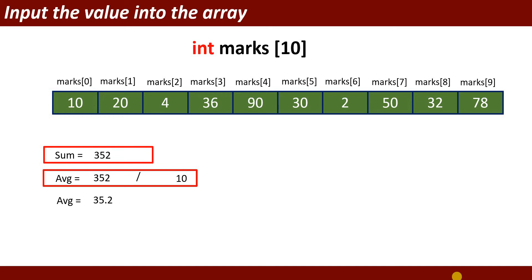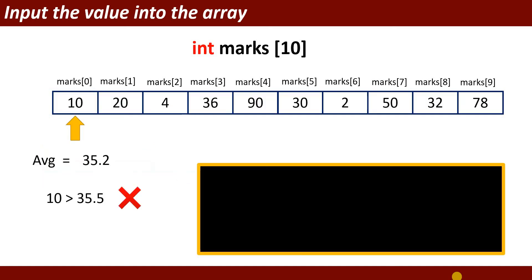Now I will divide the sum by 10 because this array contains 10 elements. 352 divided by 10 gives 35.2. The average is 35.2.